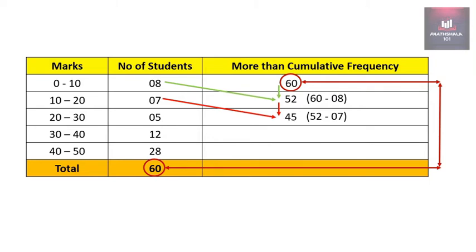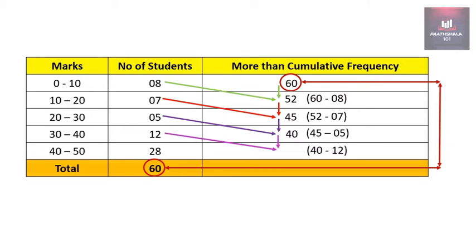For the next more than cumulative frequency we will take 45 and 5, so 45 minus 5 is 40. And for the next more than cumulative frequency we will take 40 and 12, so 40 minus 12 is 28.